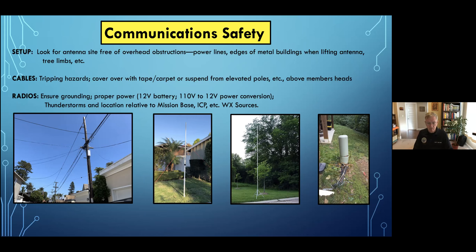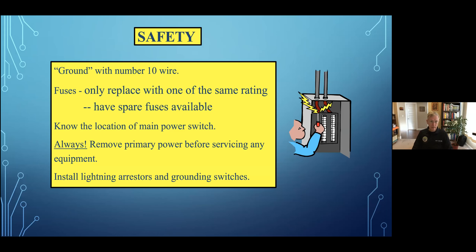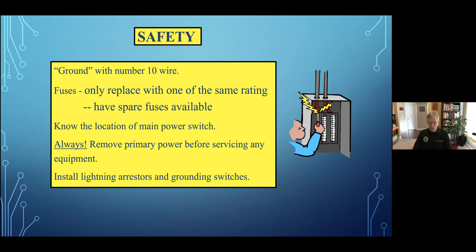If you have to, disconnect everything if you hear thunderstorms. Grounding goes without saying. Always have spare fuses available wherever you go. Know where the main power switch is. Always remove primary power before servicing — though we don't worry about that too much because any servicing is done by our national headquarters maintenance people. Lightning arresters and grounding switches are nice to have as well, and lightning arresters are usually associated with your coax cable.